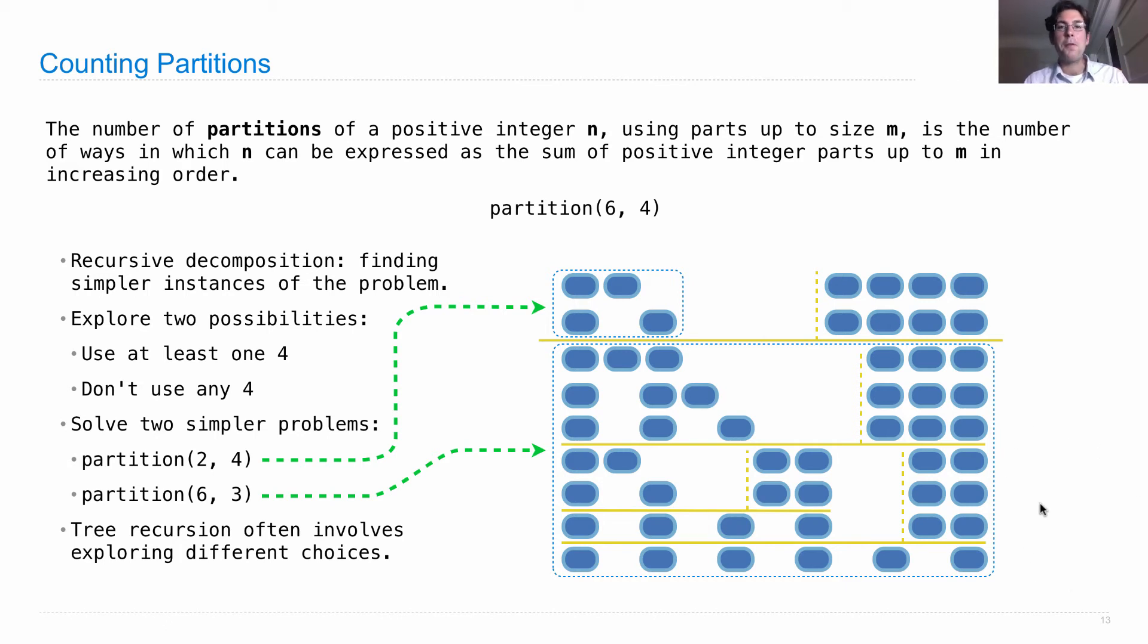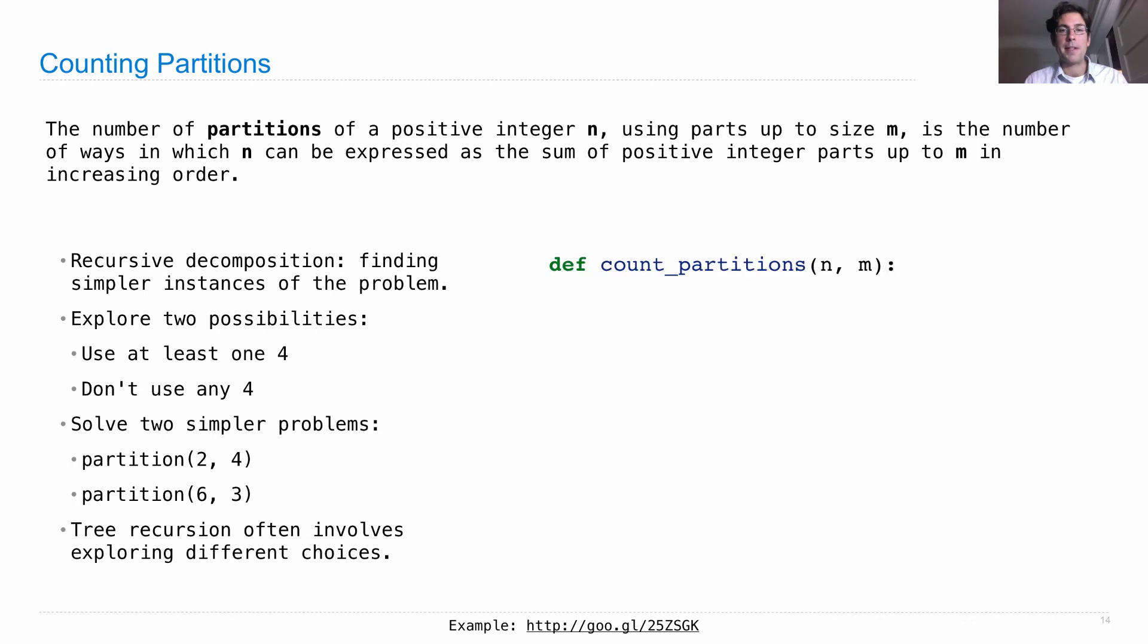Now, before I move on, think about what happens when you want to generalize this to not just 6 and 4, but n and m in general. So, we want to define a function, count partitions n, m, where n is the thing we're breaking up into pieces, and m is the maximum size of any piece. We started with partition 6, 4, and that broke up into these two options. So, try to figure out what the recursive calls look like in order to compute count partitions. Pause if you want. I'm going to tell you the answer now.